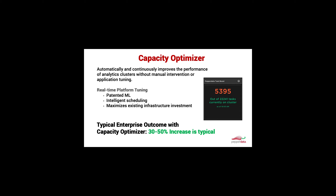Typically what we see at the enterprise level, and with very busy clusters or even growing clusters, is that you get a 30 to 50% increase in the throughput of a platform — meaning the nodes are able to do 30 to 50% more work than they could without Capacity Optimizer.